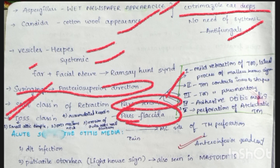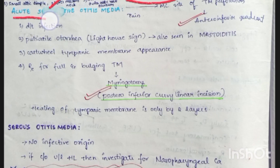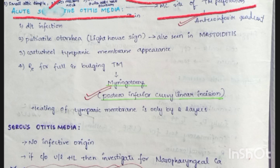Tos classification is used for pars flaccida: Stage 1 — small attic dimple present; Stage 2 — present over malleus; Stage 3 — erosion of the outer attic wall (scutum); Stage 4 — accumulated keratin.